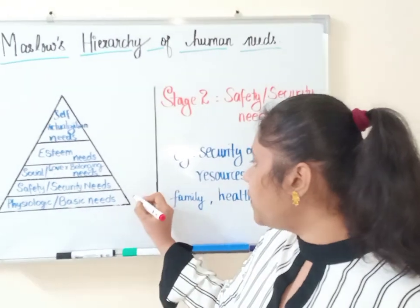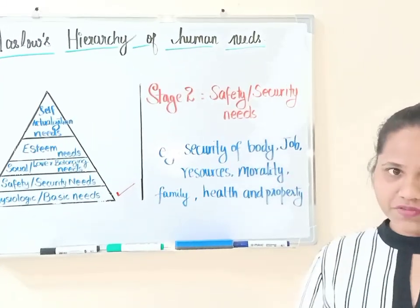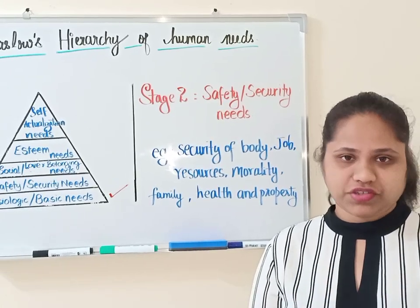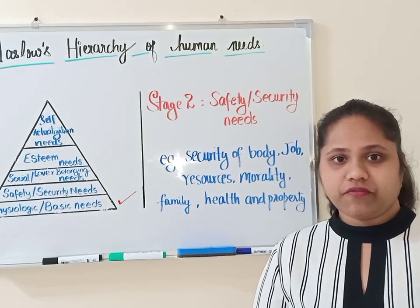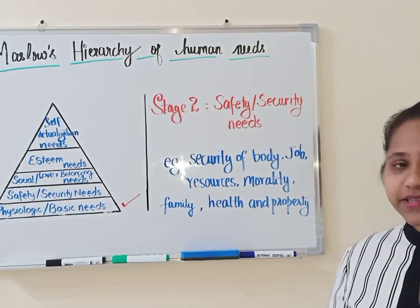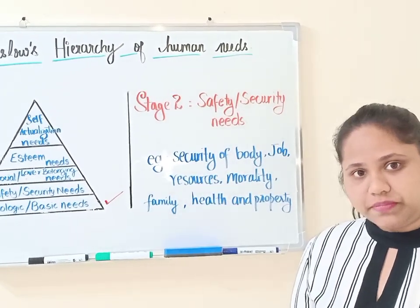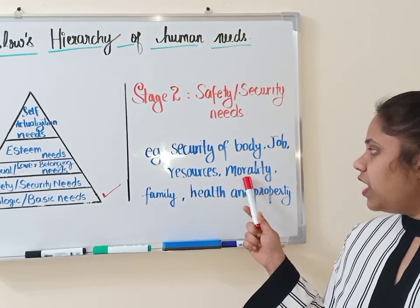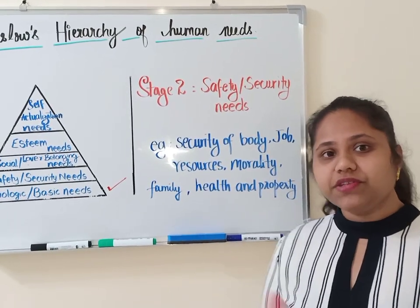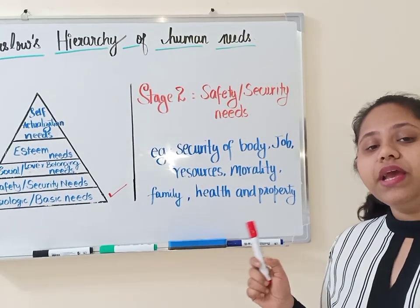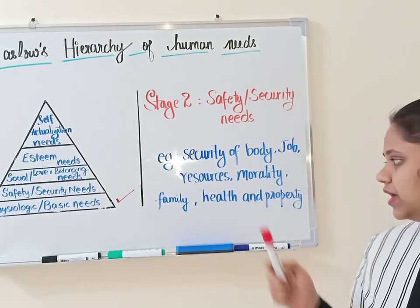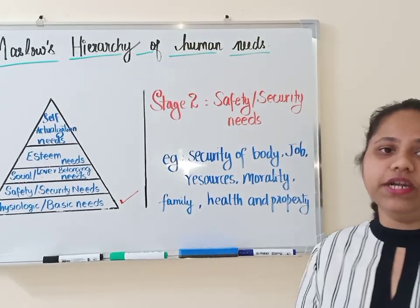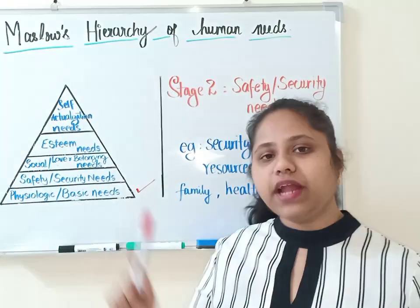When you own something such as your own body, your resources, or your family, you need to secure it for safety. In this stage we secure our body, our resources, and our job for the future. We secure our morality, our values, our customs, our family, the safety of our health, and our property. Only when all these needs are fulfilled can you move on to the next stage: social or love and belonging needs.